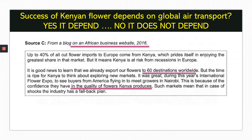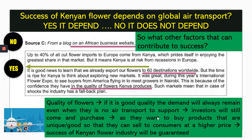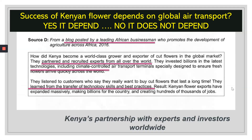Source C shows success by mentioning 60 destinations, but also argues that quality of flowers is important — even if flowers are cheap, poor quality reduces demand. This suggests that even without global air transport, if quality is good, buyers will find other means to access the products, pointing to quality rather than air transport as the key factor.